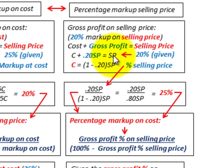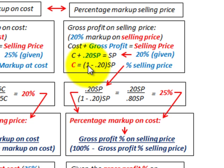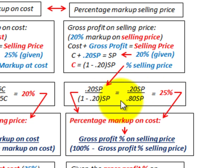Separating it out, 100% minus 20% of the selling price gives us our cost. To calculate the percentage markup on cost, we take our gross profit — 20% of selling price — and divide by our cost, which is 1 minus 0.20 times selling price, or 80% of selling price. That gives us 20% divided by 80%, which equals 25%.